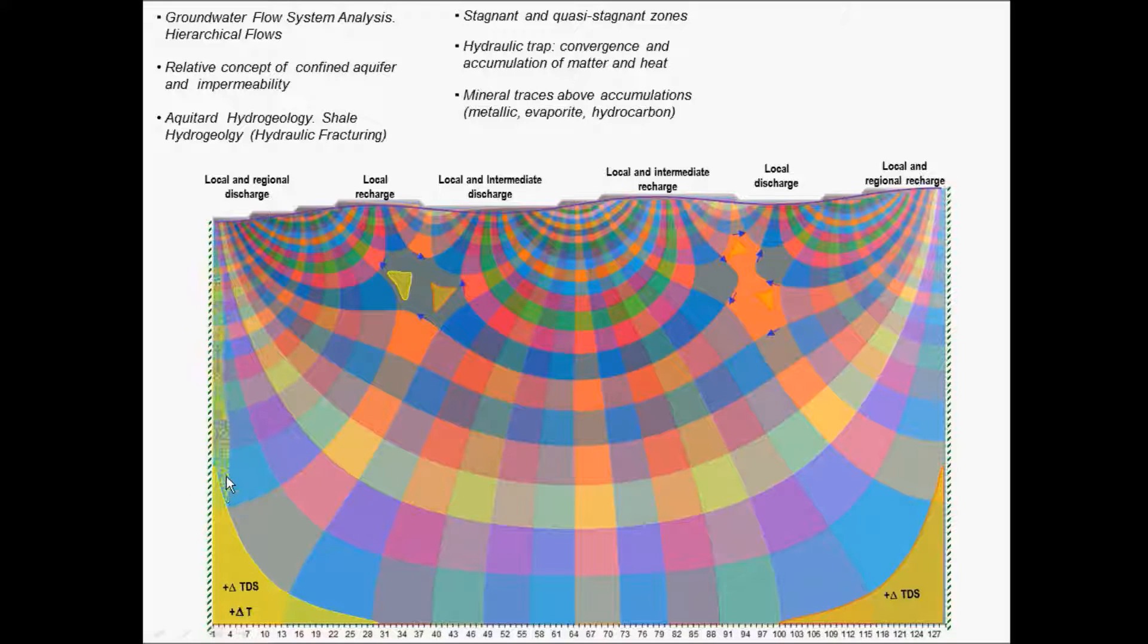Above this accumulation, you can have mineral traces, metallic evaporites, hydrocarbons. Here springs—this yellow spring is warm, could be a saline spring since it followed a long flow path. This blue one, short flow path, could be a fresh cold spring.